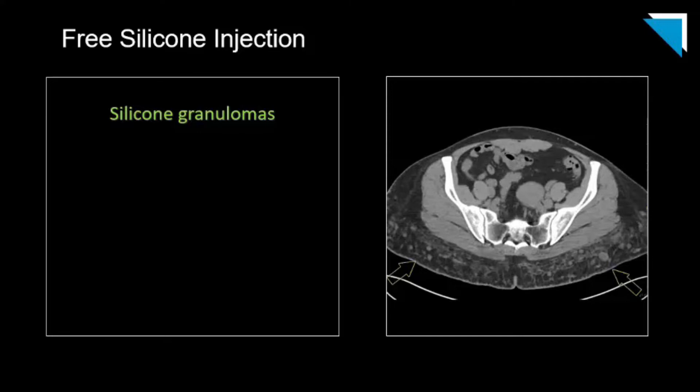Medical grade liquid silicone is strictly regulated by the FDA and basically only legal for ophthalmic procedures like retinal detachment. So pretty much any case of liquid silicone injection was done either a long time ago, on the black market in the United States, or as part of medical tourism in another country. Because of these nonstandard conditions, these patients are at high risk for cellulitis, abscess, and myositis.